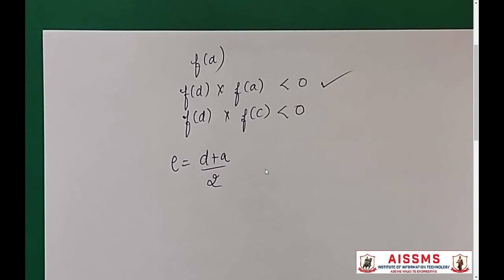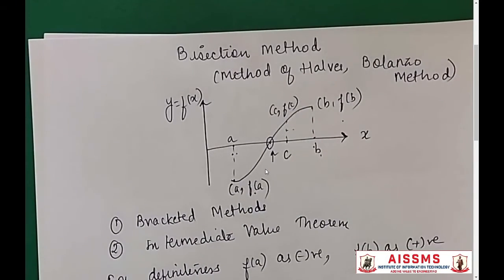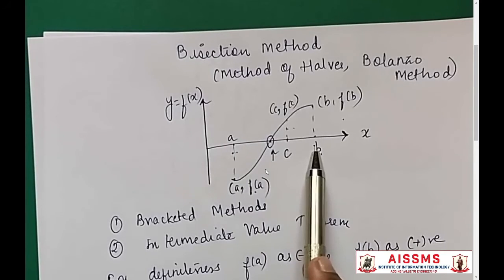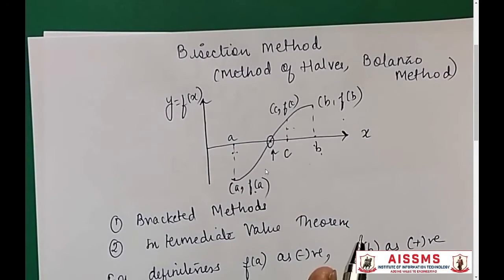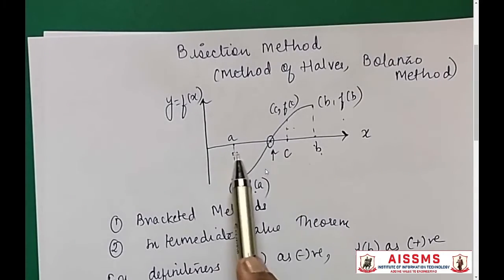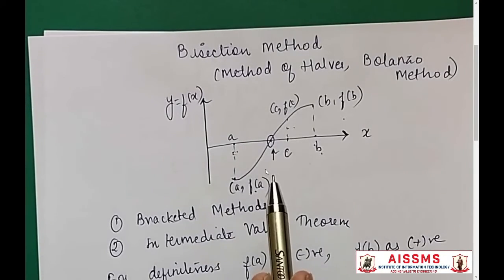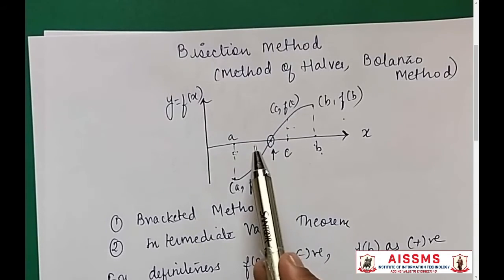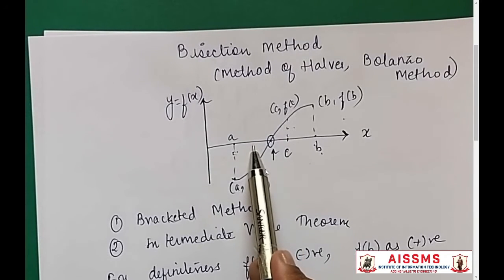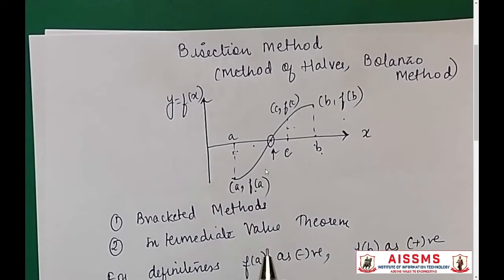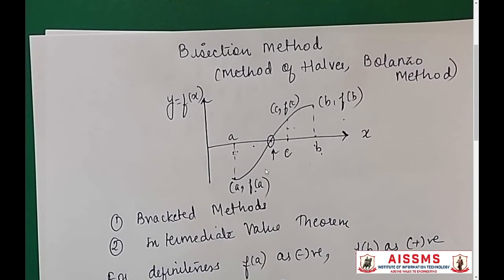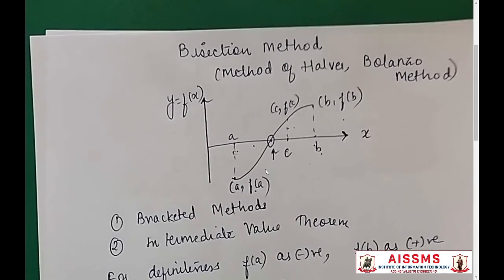What I am doing is: I start with interval [a, b]. In the first case I divide it into half, giving interval [a, c]. In the next case I divide again, giving [a, d]. I keep on dividing the interval into half, half, half — that is why this method is called the method of halves.